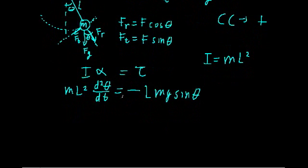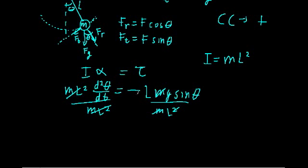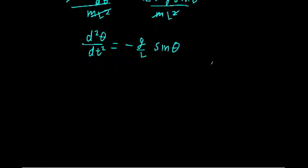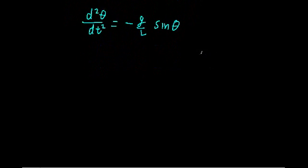So now we have this equation. Let's simplify it by dividing by ML squared on both sides. One of the M's will cancel and one of the L's will cancel, and we'll be left with the second derivative of theta with respect to time equals negative g over L times sine theta. At first glance, this kind of looks like the differential equation for simple harmonic motion, but that differential equation has the second derivative of displacement equal to minus something times that displacement — whereas here we have minus something times sine of that displacement. So it's not quite the differential equation we're used to working with, but we can do one approximation.